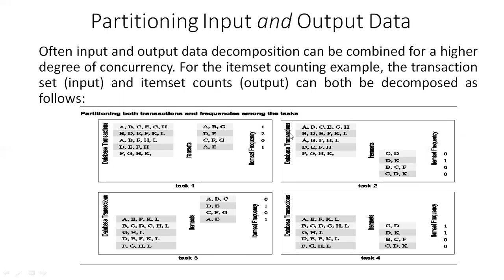Now, partitioning input and output data. Sometimes it is also possible to combine both input and output data decomposition for a higher degree of concurrency. For the atom-set counting example, the transaction set input and the atom count output can both be decomposed simultaneously, as shown below.